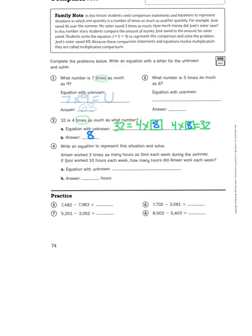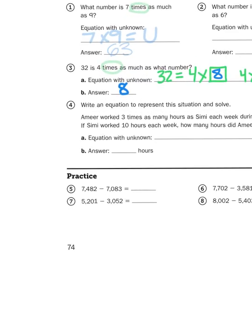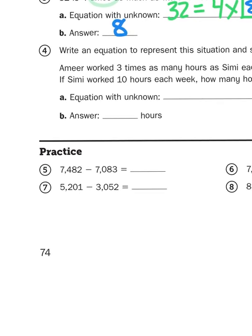Now finally, down at the bottom, we have some practice problems, subtraction, and these touch upon things that we did in unit one. So let's try one. I'm going to do number five, 7,482 minus 7,083. Now this one seems pretty easy, especially when you look at it from side to side.